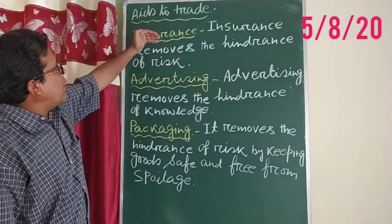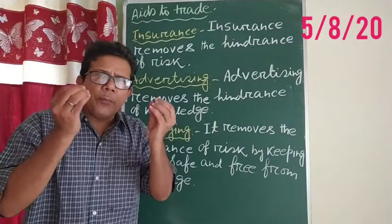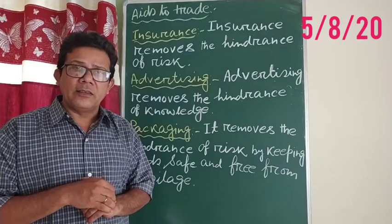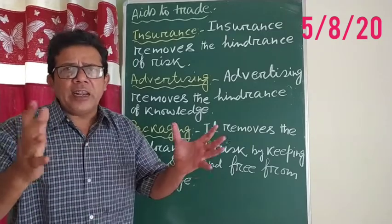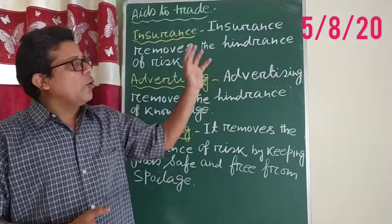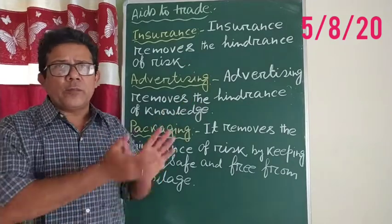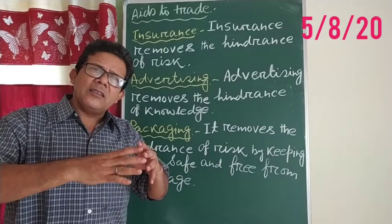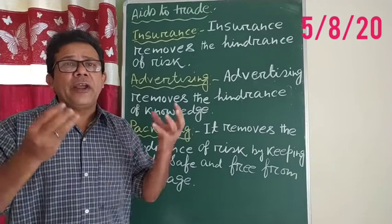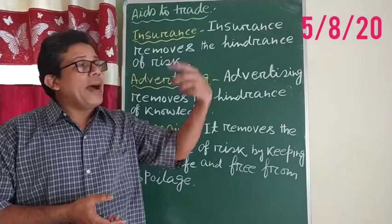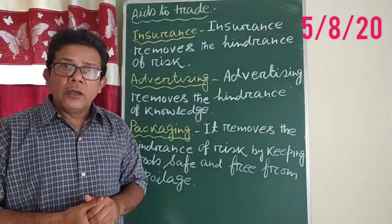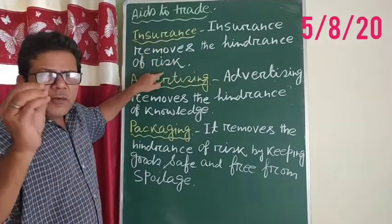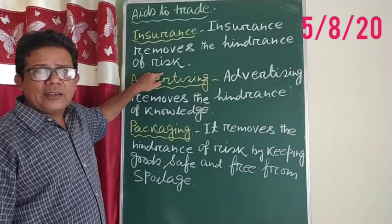The first Aid to Trade I will discuss today is insurance. Insurance removes certain difficulties of trade. Whenever you are doing buying and selling, there is definitely a lot of risk. For example, you are bringing goods from factories to your place, and in between an accident takes place — that will be a great loss. Or you are running a small shop and a short circuit takes place, burning your business place.